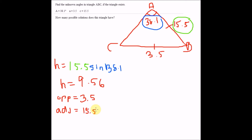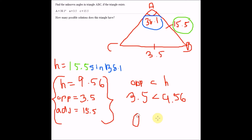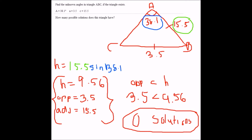We write down the opposite side, which is 3.5, and the adjacent side, which is 15.5, and compare them. Is the opposite side less than the height? Yes — the opposite side is 3.5, which is less than H = 9.56. We can stop looking through the scenarios and conclude there are zero solutions.